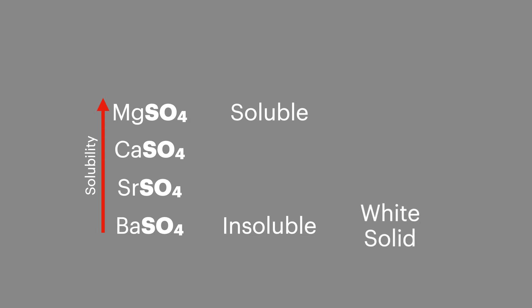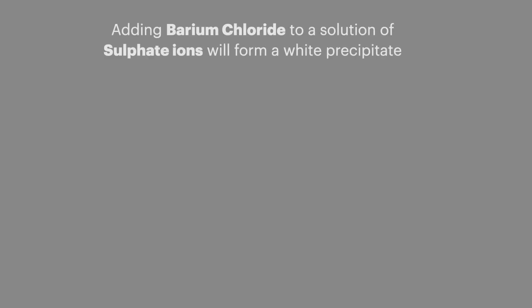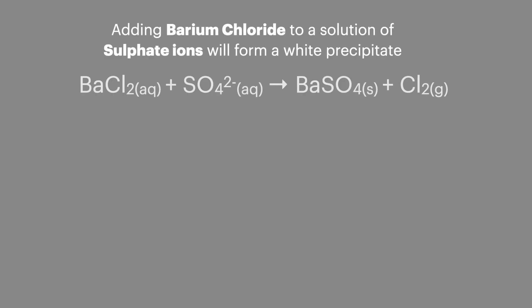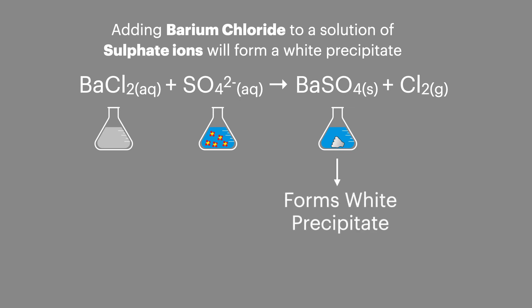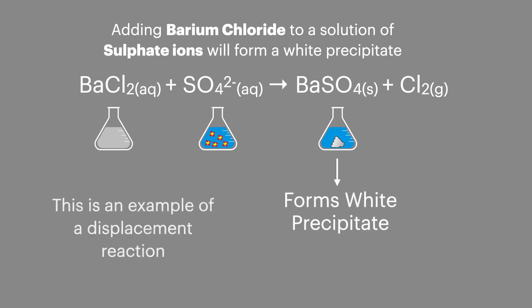With this information, we can see how testing for sulfate ions works. Adding a few drops of barium chloride to a solution containing sulfate ions will form a white precipitate. This is an example of a precipitation reaction and shows a positive test for sulfate ions in solution.